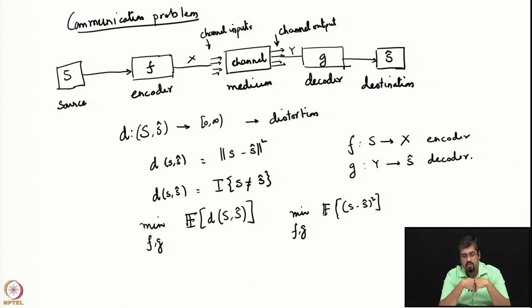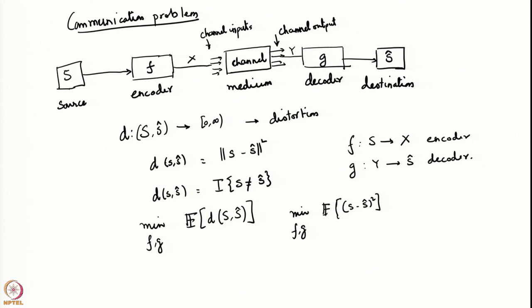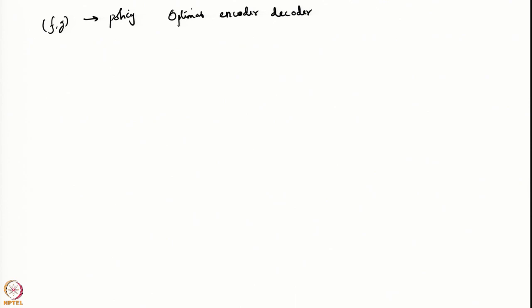Now that we know it is a stochastic decision problem, we can start asking sharper questions. f and g are functions that define your encoder and decoder. Another way of looking at f and g is to say that f, g together form a policy. The communication problem is a stochastic decision problem in which we need to find the optimal policy. Finding the optimal encoder and decoder is really about finding the optimal policy.